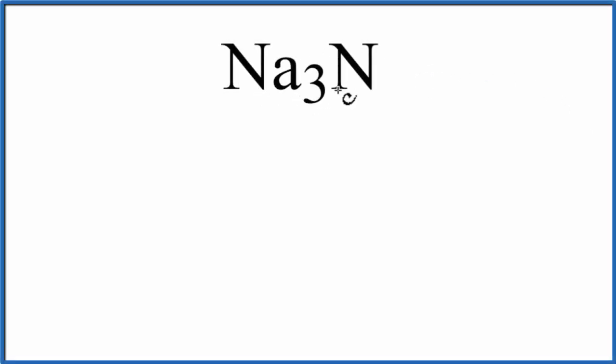To draw the Lewis structure for Na3N, that's sodium nitride, we need to recognize that this is an ionic compound. We have a metal and nonmetal. That makes it ionic.